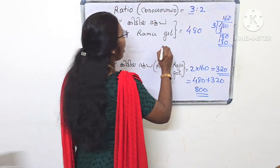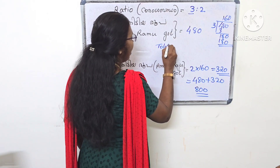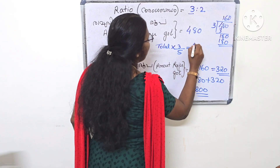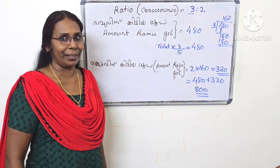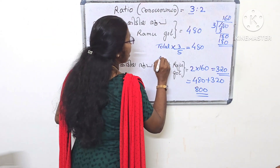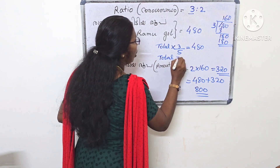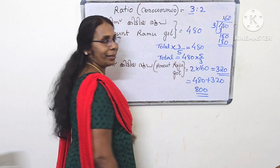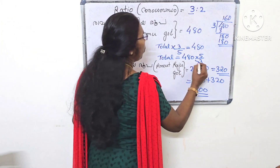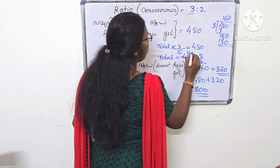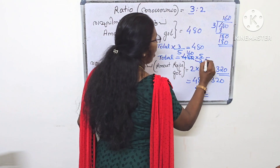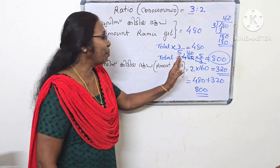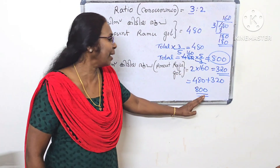Now let's review. The total means that 3 of 5 parts equals 480. That's why the total sum equals 800 rupees. If you think about 3 parts equaling 480, you can find that 1 part is 160 and 2 parts gives Raju 320 rupees. This is the solution.